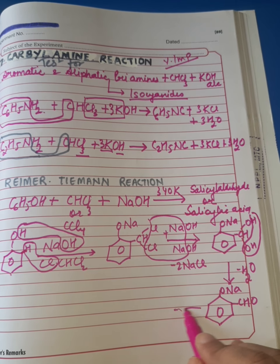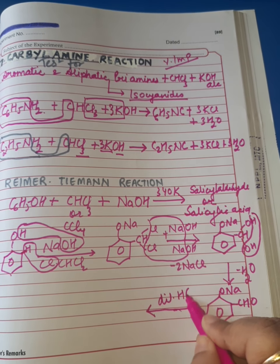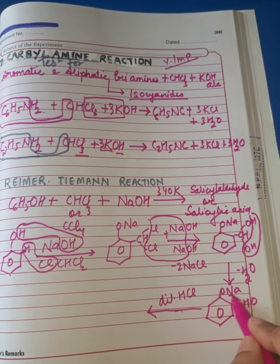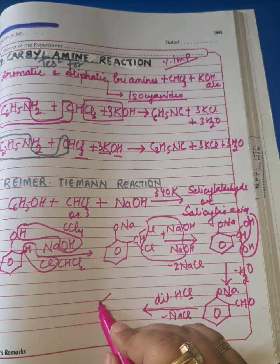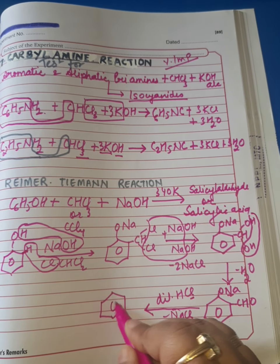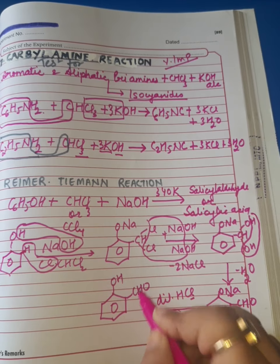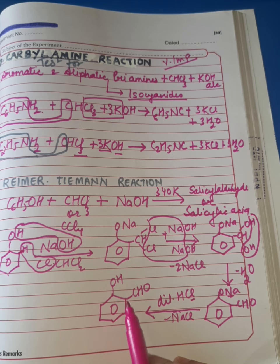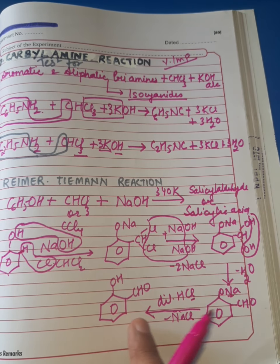The moment water is removed, we have ONa and CHO. This is sodium salt of salicylaldehyde. This compound on acidic hydrolysis with dilute HCl loses NaCl and results in the formation of salicylaldehyde, which is an ortho-hydroxy aldehyde aromatic compound.